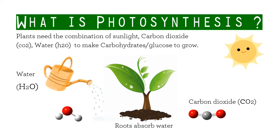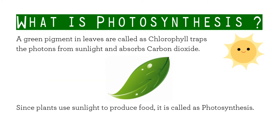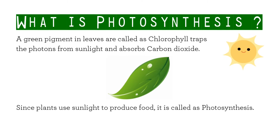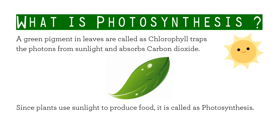Roots absorb water. A green pigment in leaves called chlorophyll traps the photons from sunlight and absorbs carbon dioxide. Since plants use light to produce food, it is called photosynthesis.